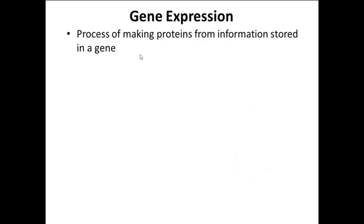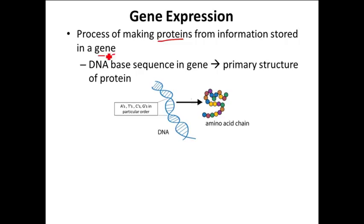Today we're going to talk about gene expression. Gene expression is the process of making proteins from information stored in a gene. The gene is in the DNA — it's a sequence of bases, A's, T's, C's, and G's in a particular order — and that is used to make the primary structure of the protein, or the sequence of amino acids. In general, one gene makes one protein. For an introductory class on gene expression, thinking about one gene making one protein is just fine.